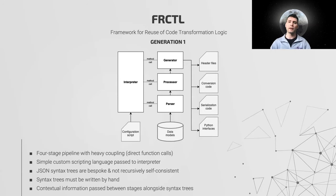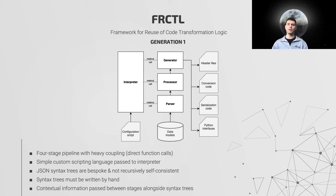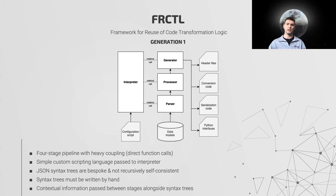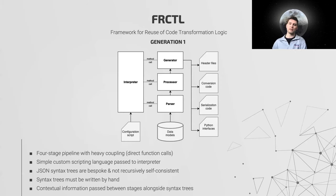Version 1.0 used a four-stage pipeline with the code generation flow directed by a simple custom scripting language. Each stage was responsible for a portion of the code generation process, such as parsing code or transforming code. Put together, the four stages created a complete pipeline. It had a number of design choices that became sticking points down the road, such as JSON syntax trees that lacked recursive self-consistency and had to be written by hand, as well as type coupling between the four stages of the pipeline. Contextual information was passed between the stages alongside the syntax trees through direct function calls. This also became a sticking point.